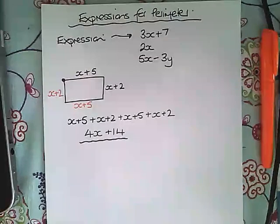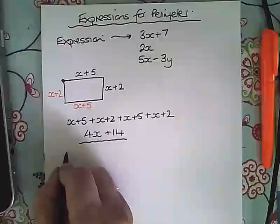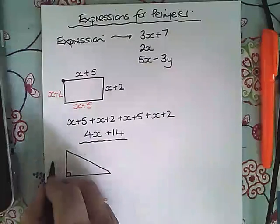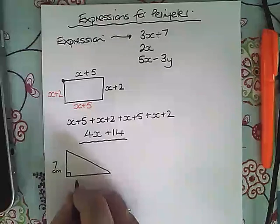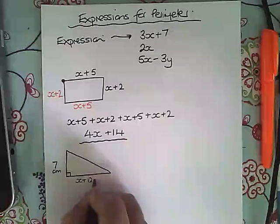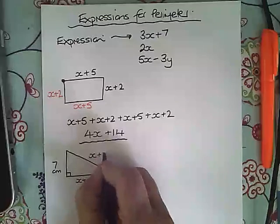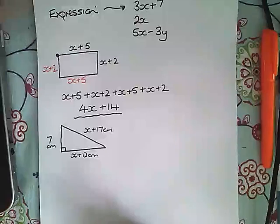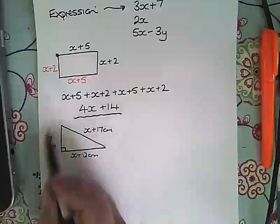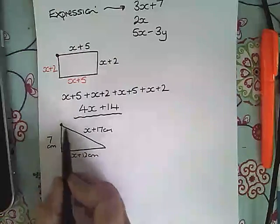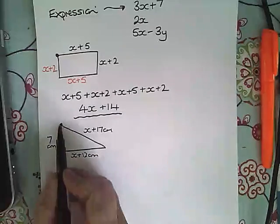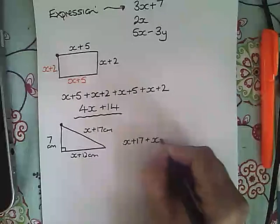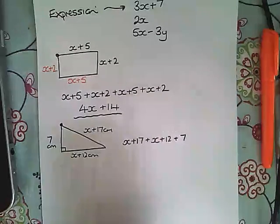Of course it works for any shape. So if you have a right angle triangle like this and this was 7 centimeters, this was x plus 12 centimeters, and this was x plus 17 centimeters, and again we were asked for an expression for the perimeter of the shape, write down everything that we can see. Put our dot up here and we're going to go this way round and include all of the sides. So we have x plus 17, add x plus 12, add 7.